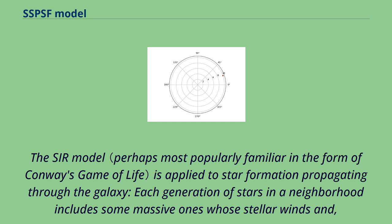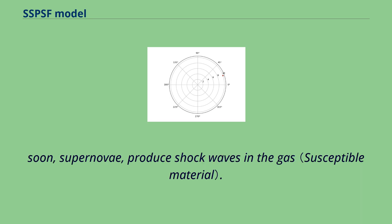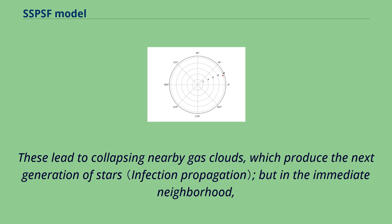Each generation of stars in a neighborhood includes some massive ones whose stellar winds and supernovae produce shock waves in the gas. These lead to collapsing nearby gas clouds, which produce the next generation of stars, but in the immediate neighborhood.